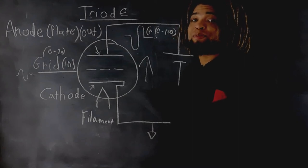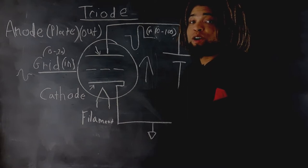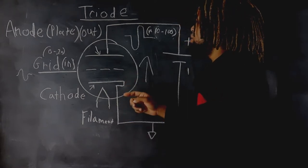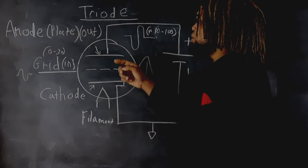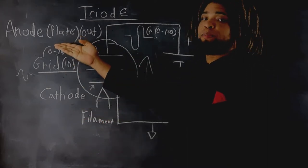Here we will briefly discuss the operation of a triode. As mentioned in the previous video, a triode has three elements: the cathode, the grid, and the anode, or what is often called the plate.